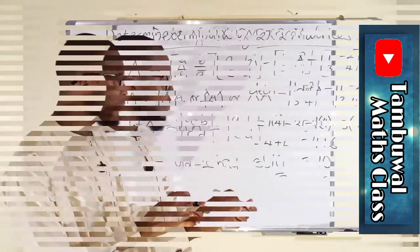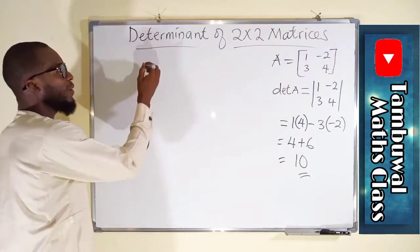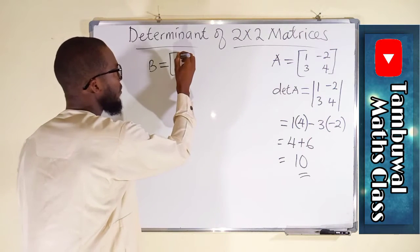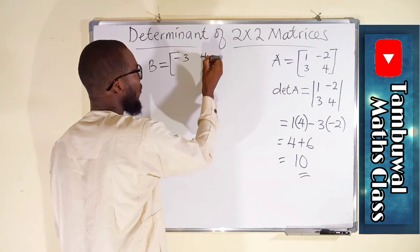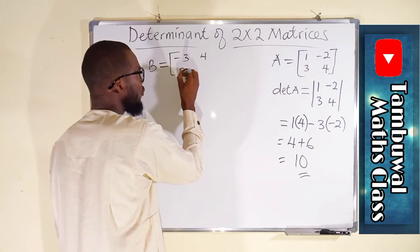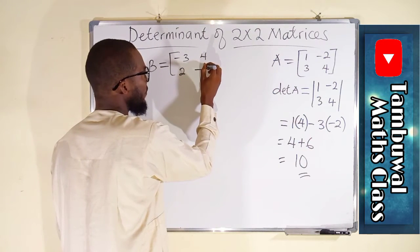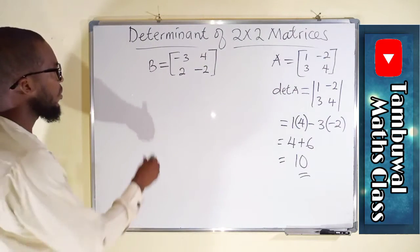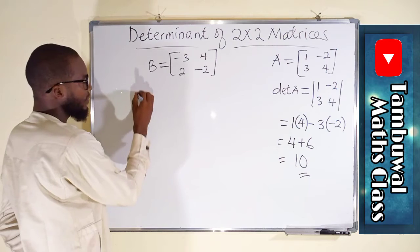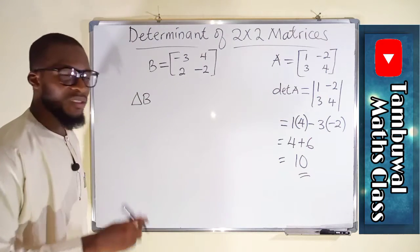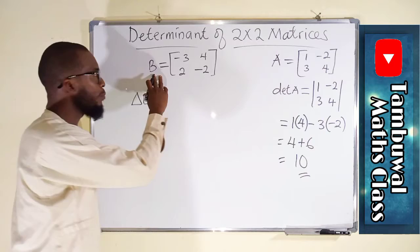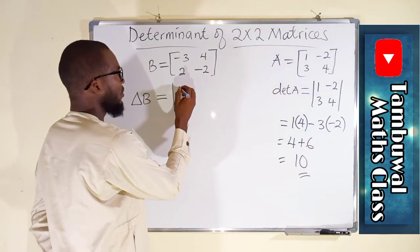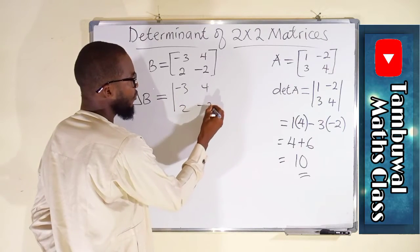Let us take another example. Suppose we have a matrix B as minus 3, 4, 2, negative 2. We want to find the determinant of this matrix. You can write it as delta B, which denotes the determinant of B. This is equal to minus 3, 4, 2, minus 2.